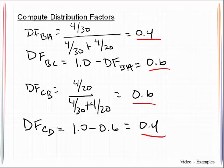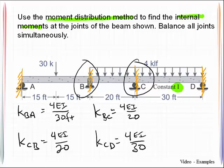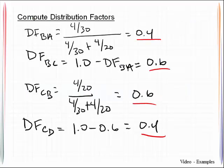Now that is based on the internal joints. The distribution factors for the end joints are dependent upon what those were prior to us locking. So for instance at point A it was a roller which means it had been free to rotate. What that means is that any moment applied to joint A has to be taken by member AB.